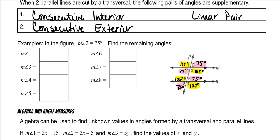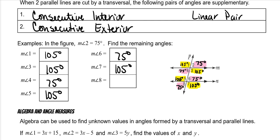So now we just fill in all these answers: this is 105 degrees, this is 105 degrees, 4 is 75 degrees, 5 is 105 degrees, 6 is 75, 7 is 105, and 8 is 75. But this pattern — the pink and the yellow — will happen on every single set of parallel lines cut by a transversal.